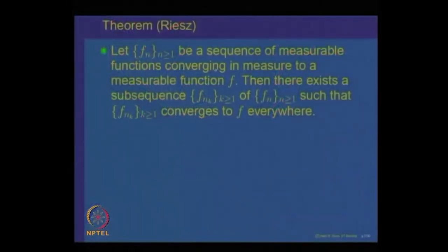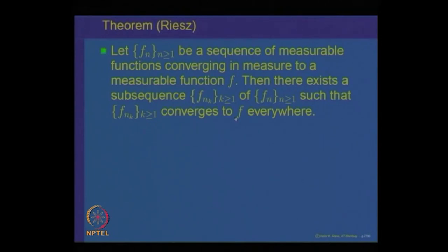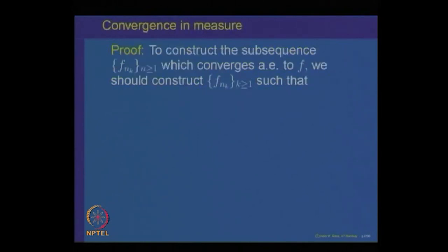Riesz theorem states: let F_n be a sequence of measurable functions converging in measure to a measurable function F. Then there exists a subsequence F_{n_k} such that F_{n_k} converges to F almost everywhere. Every sequence which converges in measure has a subsequence which converges almost everywhere. Let us see a proof of this.